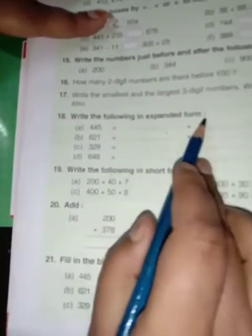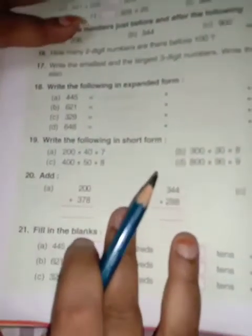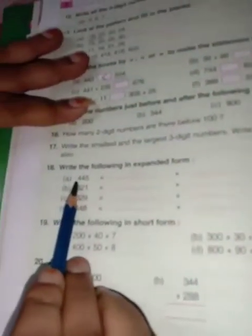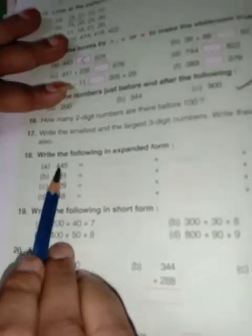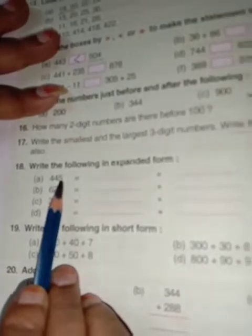18 is write the following in expanded form. Means you have to expand. Here you see according to their place. Here first, in 100 place, 4 written. 10 place, 4 written. And 1 place, 5 written. So here you write it down. 400 plus 40 plus 5. Like this you do all the sums.